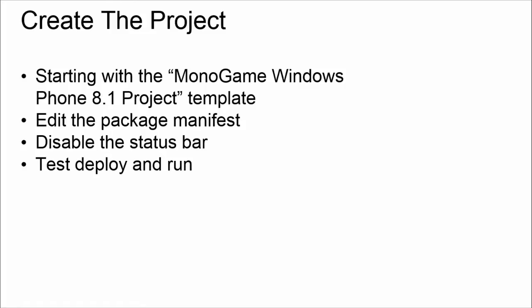Let's set up the project. We're starting with the Monogame Windows Phone 8.1 project template. Later we'll talk about porting it to other platforms. I normally edit the package manifest, which defines the description and name of the game so that when you deploy it onto a device it has a name instead of something like 'game one.' Also disabling the status bar on the phone — if you have a full screen game, there's a little status bar on a Windows Phone that pops down and you don't want that over your game.